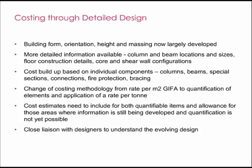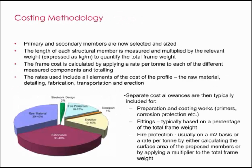More detailed information will become available — for example, column and beam locations and sizes, floor construction details, core and shear wall configurations. For steelwork solutions, the cost planning will become more detailed with costs built up from individual components such as columns, beams, special sections, connections, fire protection, and bracing, and key components will be costed using a rate per tonne. Close liaison with the designers will be crucial throughout the more detailed cost planning process. In the early stages, allowances should be included for those items not yet quantifiable, for example the weight of fittings, type of fire protection, as well as specific items such as framework to an atrium roof or double-height feature facade. The key components of a steel frame and their typical proportion of the overall frame cost are set out on the pie chart, which we will review later in this presentation.